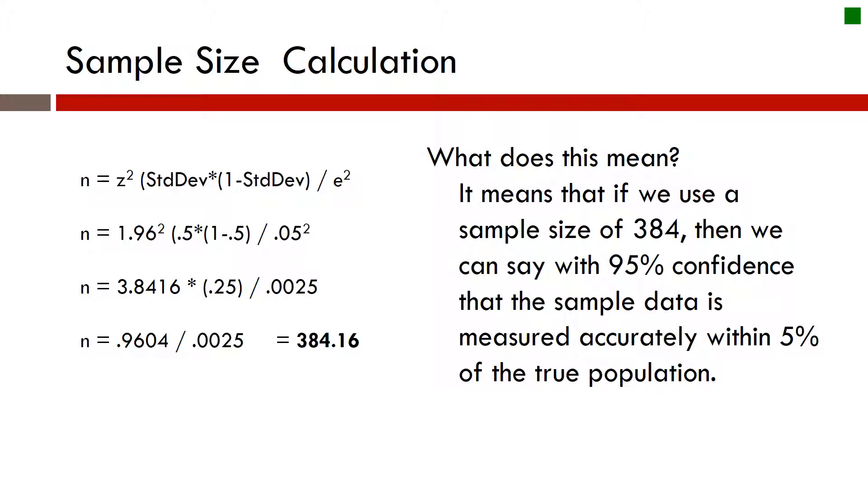What does this mean? What does the 384 mean? That's, of course, our sample size. And it means that if we use a sample size of 384, we can say with 95% confidence that the sample data is measured accurately within 5% of the true population. That's the statement that we're making as a result of doing this.